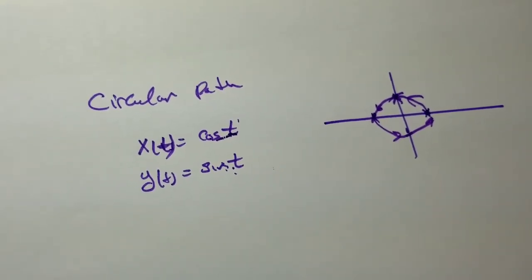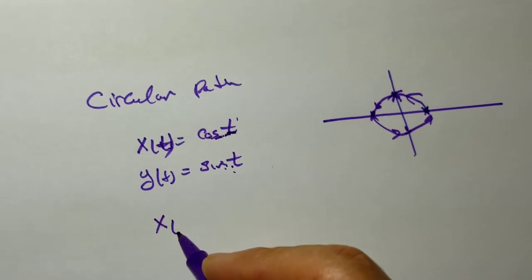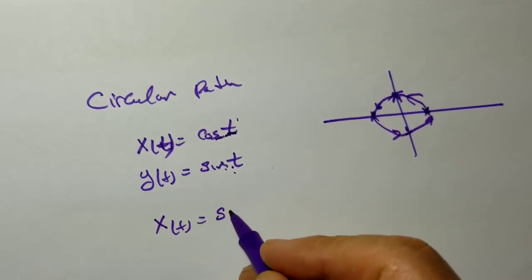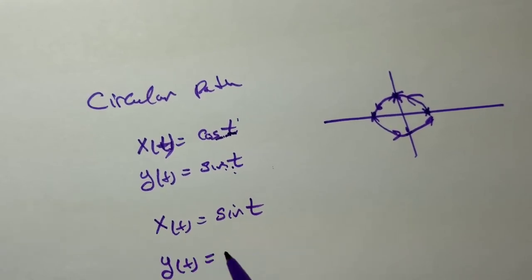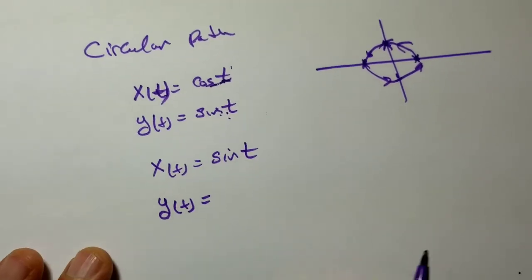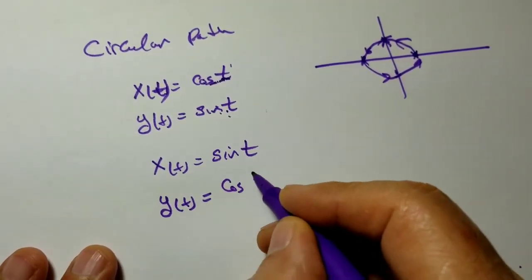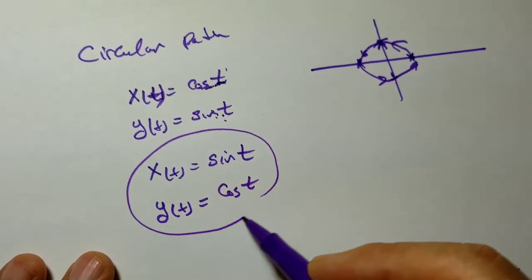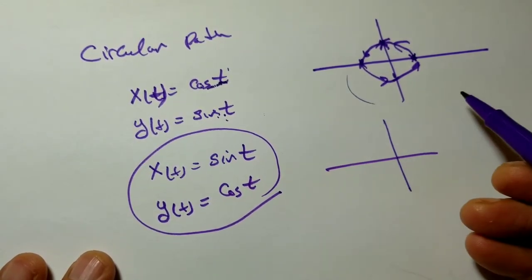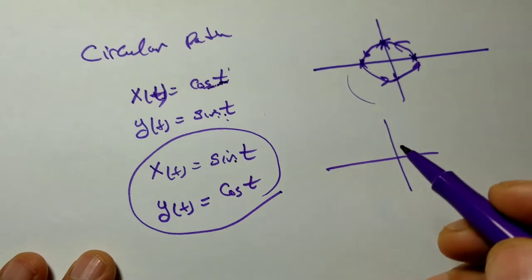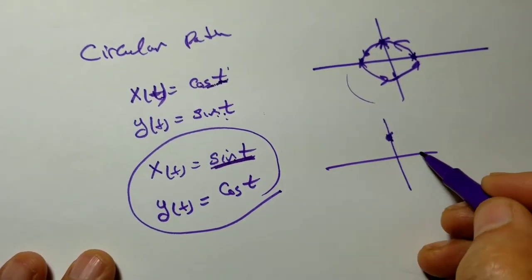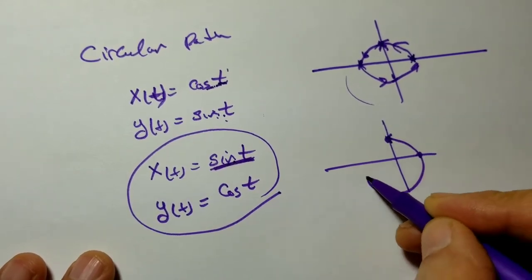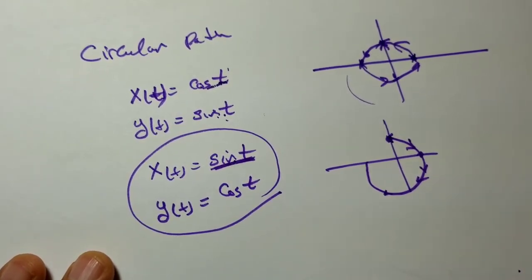Somebody asked: what if you make sine correspond to x instead of cosine? You can switch them. By switching, you're switching the orientation. When t is 0, you have (0, 1). When t is pi over 2, you get (1, 0). Your orientation changed, but you still get the unit circle.